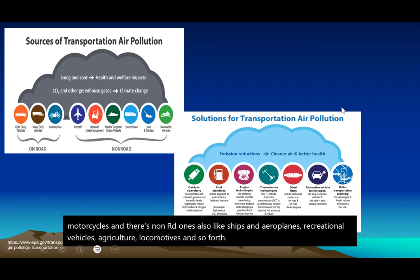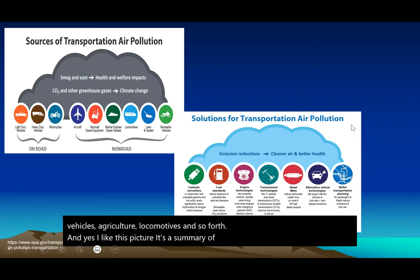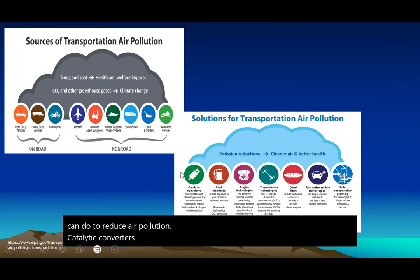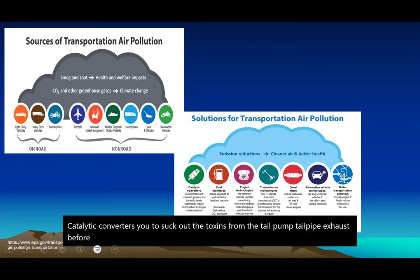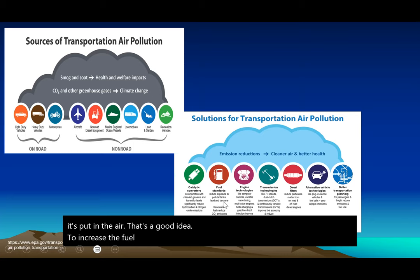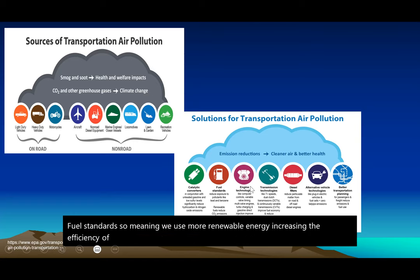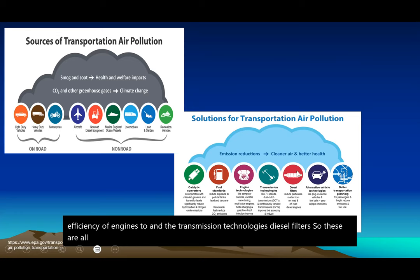Here's a summary of things humans can do to reduce air pollution: catalytic converters to remove toxins from tailpipe exhaust before they enter the air, increasing fuel standards so we use more renewable energy, reducing exposure to pollutants, increasing the efficiency of engines and transmission technologies, and diesel filters. These are all alternatives to reduce pollution if you use fossil fuels.